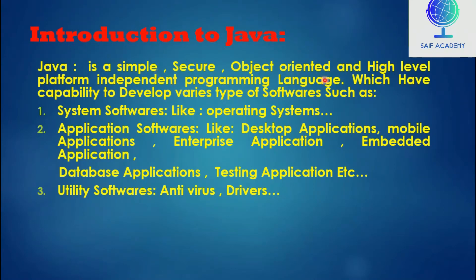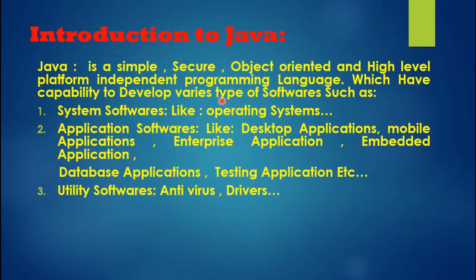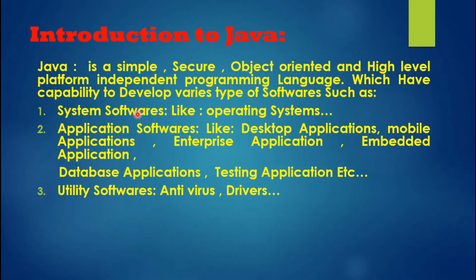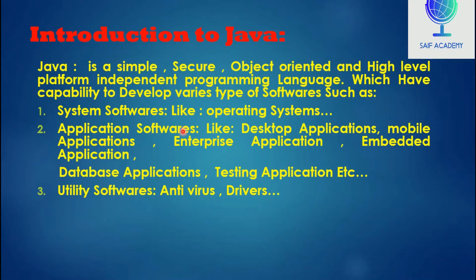System software is software which is required to operate the system, like an operating system. Even if you don't use application software, the system software is still used. You need to install the system software.